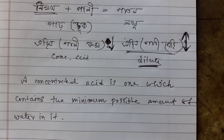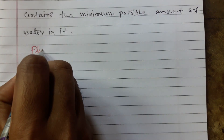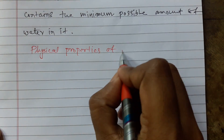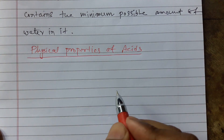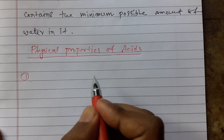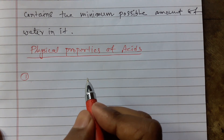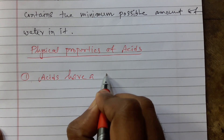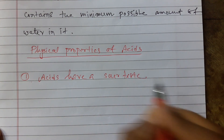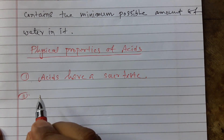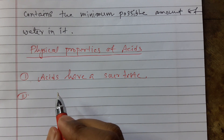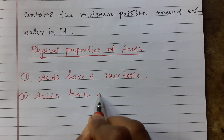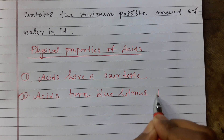Now for the physical properties — all acids have physical properties. Number one: they have a sour taste. Number two: they turn blue litmus paper red.